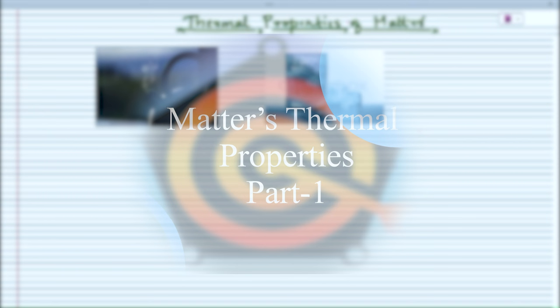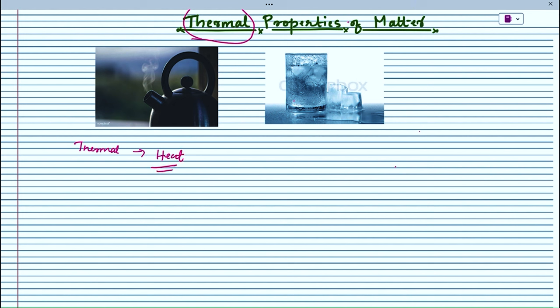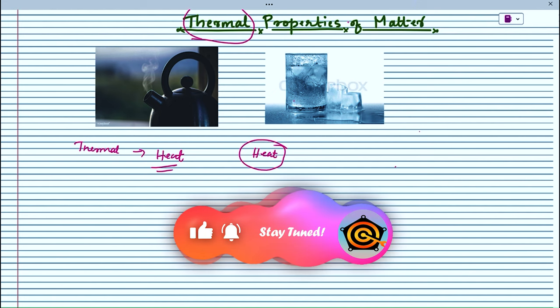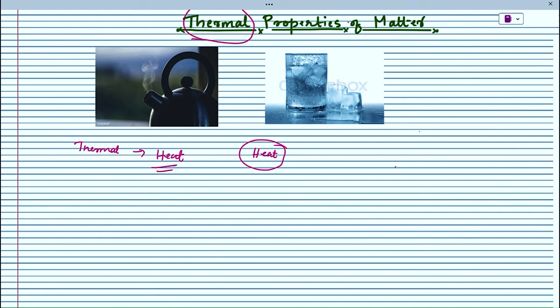Today, we are going to study a new chapter in physics — thermal properties of matter. The term thermal refers to something related to heat. Here we are going to discuss about heat energy and its transformation, that is the mechanics of matter related to energy transfer, mainly of heat energy. We will discuss about the properties of matter under heat energy and the transition of heat from one system to another.